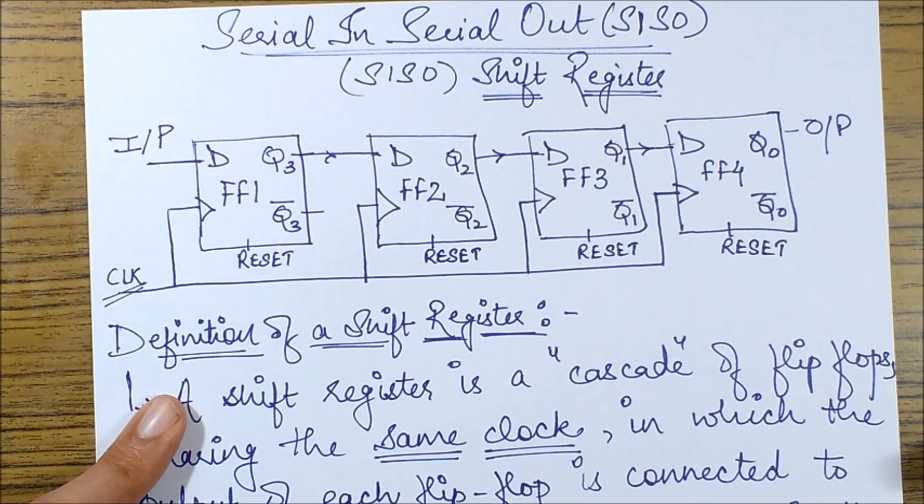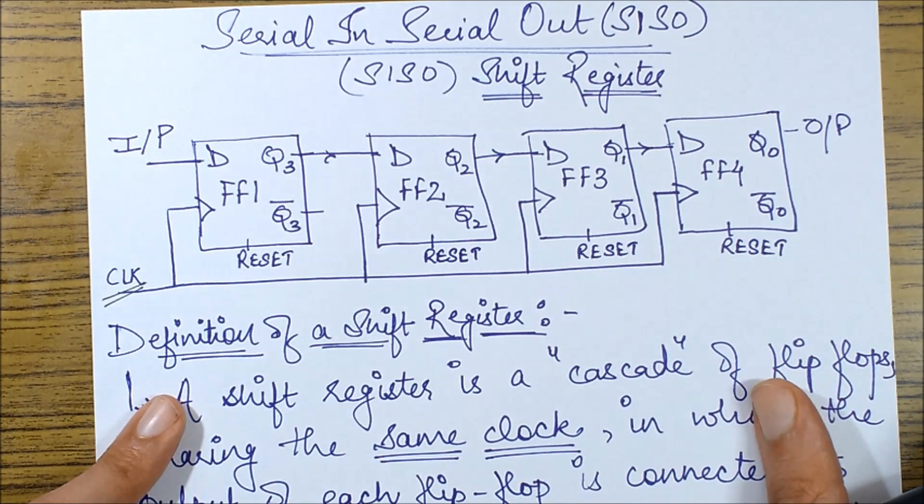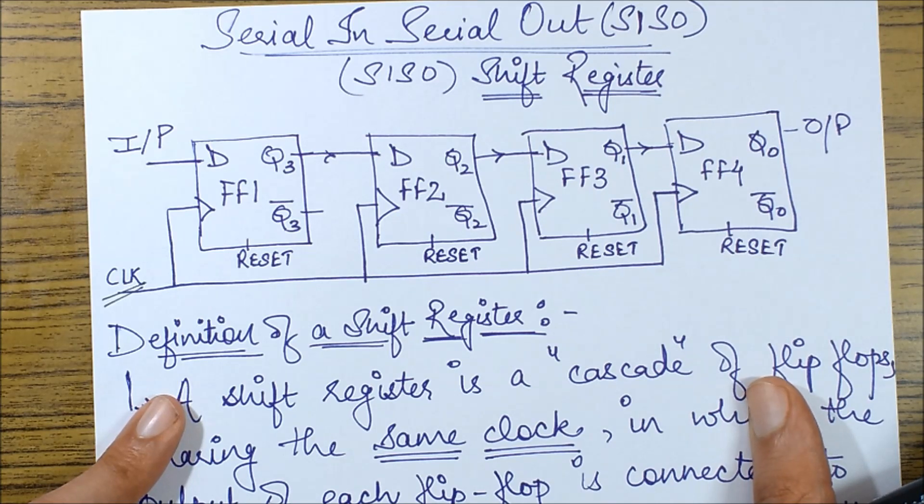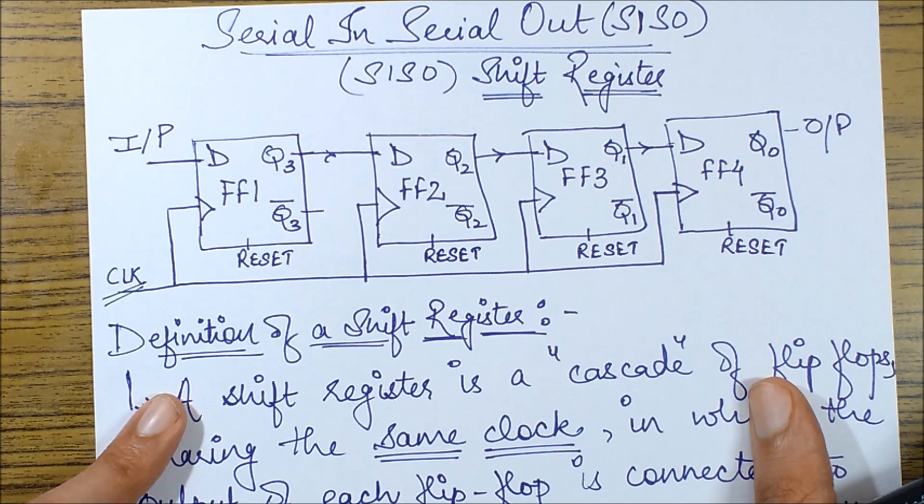Now next question comes, why have we actually used a D flip flop? Why not the other flip flops? The answer is we are just shifting the bits, we are not modifying the bits, and we know that if we use a D flip flop which is also known as a transparent latch...